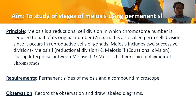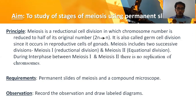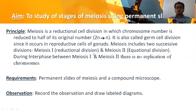In humans, the normal 46 chromosomes in body cells are reduced so that daughter cells receive 23 chromosomes in meiotic cell division, which is half the original number. It is also called germ cell division because it occurs in the reproductive cells of the gonads — the gonad mother cells. Meiosis includes two successive divisions: meiosis one and meiosis two.